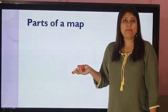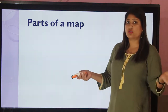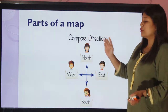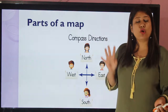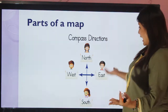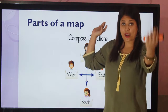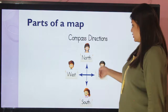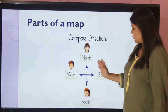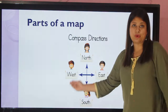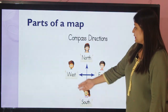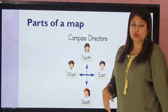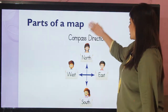So there are also different parts of a map, like directions. There are four directions you need to keep in mind: east, west, north, and south. You can see them here in the picture as well. These are the four directions that a compass shows.